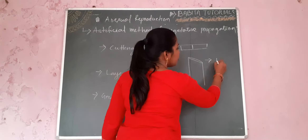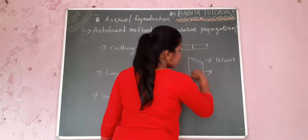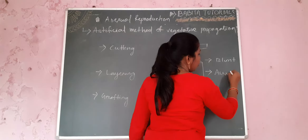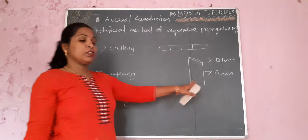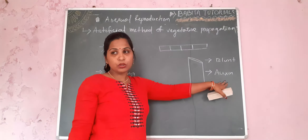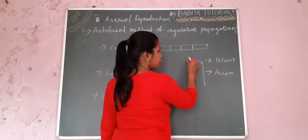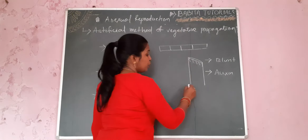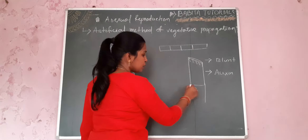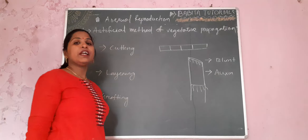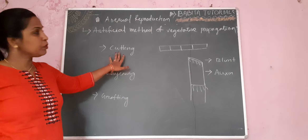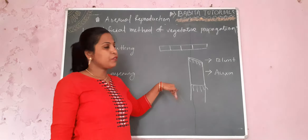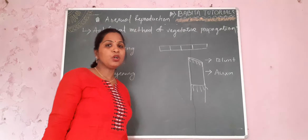So the first step is the oblique cut. Then after cutting it at an oblique angle, we have to dip it in auxin. Auxin is one type of growth hormone. After dipping in auxin, it will develop roots. The pericycle of the stem will divide to form roots. That is how cutting is done.